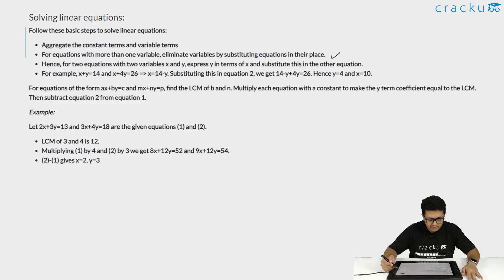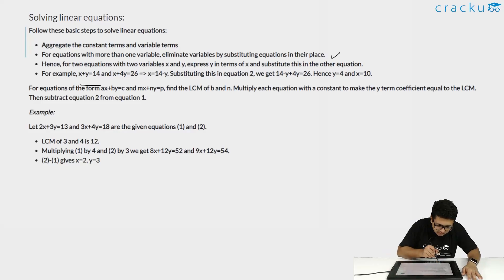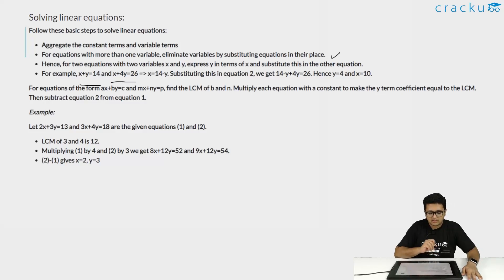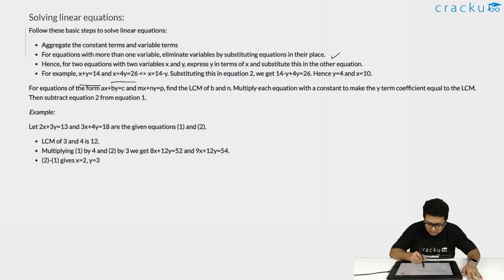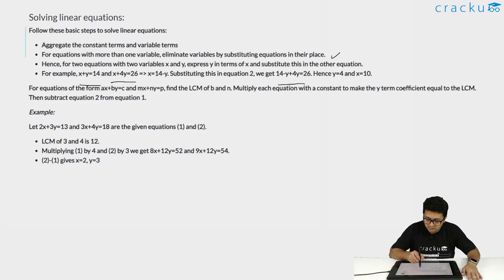For example, if there is one linear equation which is x + y = 14, and another linear equation which is x + 4y = 26, substituting x = 14 − y into equation 2, we will get 14 − y + 4y = 26. By solving this linear equation in a single variable for y, we will get y = 4 and x = 10.